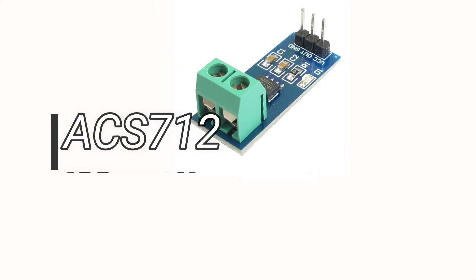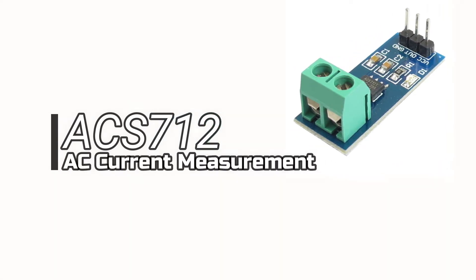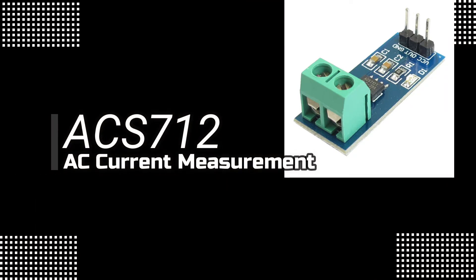There are a lot of videos on YouTube which describe the working of ACS712 but they have some issues in their coding which they use to measure different samples from the current sensor. So in today's video we will talk about how to accurately measure AC current using this ACS712. We have a lot of things to discuss, so let's dive right in.